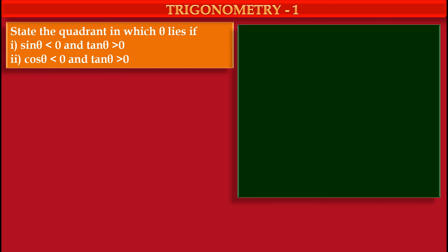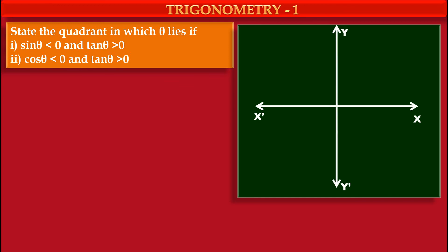First, we have to draw our coordinate system. This horizontal line is our x-axis and this vertical line is our y-axis. This is our standard unit circle having center at the origin and radius 1 unit. Now, if you want to draw any angle in this system, then first we have to draw an initial arm — see this green ray. Suppose this is our initial arm, O-X.